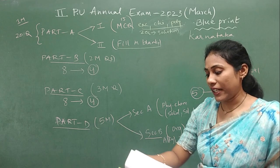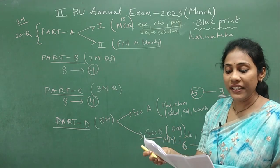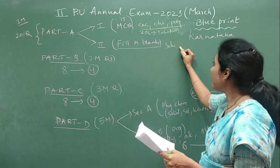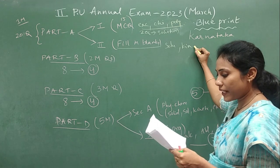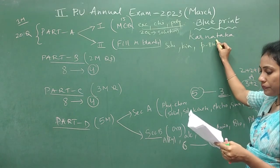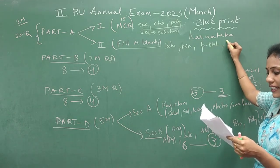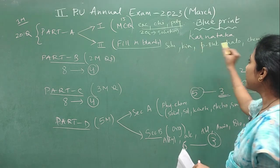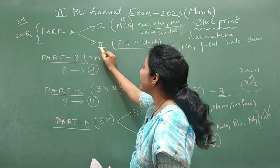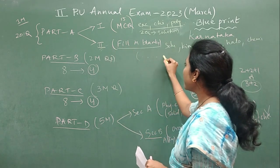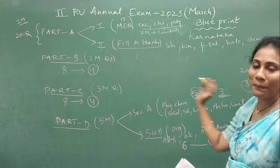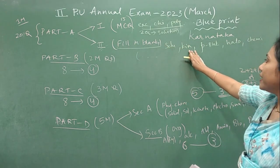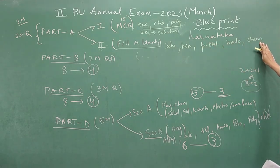For the fill-in-the-blank type questions — the five questions come from: solutions chapter, kinetics, p-block, haloalkanes and haloarenes, and chemistry in everyday life. So concentrate on these chapters for the second main. The answers will be given in brackets — you just have to choose the correct one and fill in the appropriate blank.